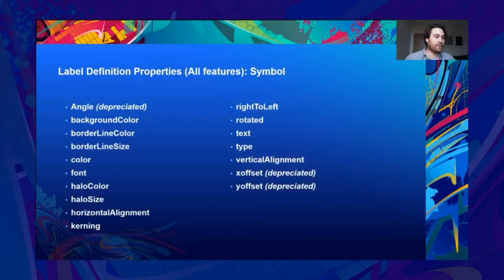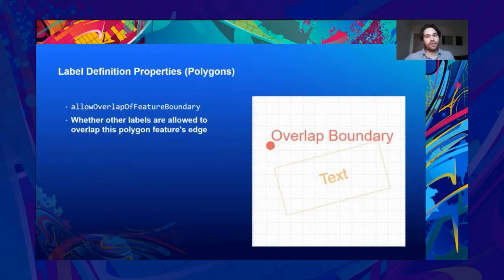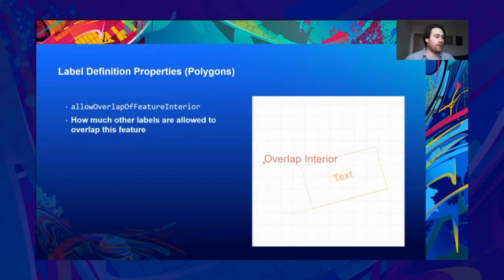Symbol properties: a bunch of presentational properties that can be set. The angle and offset should not be used — they're legacy properties that have been around since before we had a labeling engine. Moving on to polygon-only properties: allow overlap of feature boundary — how far you want labels to be placed within the polygon feature edge. Allow overlap of feature interior — how far labels are allowed to be placed into the polygon's feature interior. We're working on improving the edge cases for the void value at the moment.